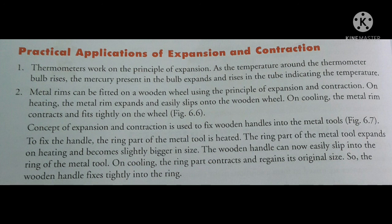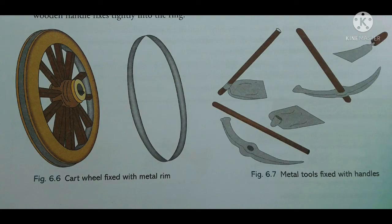You can see figure 6.6 in your book. The concept of expansion and contraction is also used to fix wooden handles into metal tools. To fix the handle, the ring part of the metal tool is heated. It expands and becomes slightly bigger in size, so the wooden handle can easily slip into the ring. On cooling, the ring part contracts and regains its original size, and the wooden handle fixes tightly into the ring. Figure 6.6 and 6.7 show a cart wheel fixed with a metal rim by expansion, and metal tools fixed with a handle due to expansion of metal.